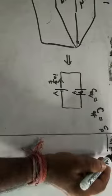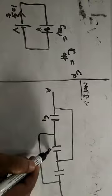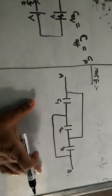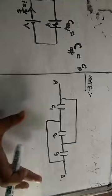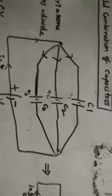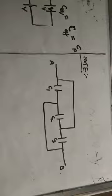Now, applications of parallel combination of capacitors. Here is one interesting application. Three capacitors C1, C2, and C3 are given. Find the effective capacitance between terminals A and B. When the diagram is given in a different orientation, how do you find the effective capacitance? Listen carefully — I will tell you an interesting approach.